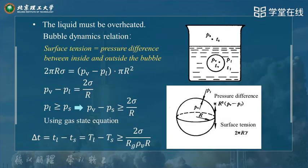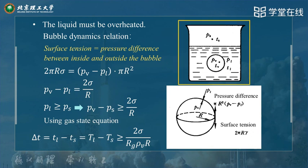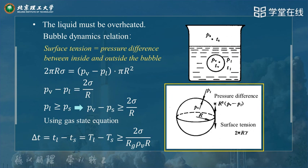Let's discuss a very typical pool boiling process. In this case, there are two very special conditions. One is that the liquid must be overheated. Another is that the liquid volume must be very large. Many bubbles are produced in the liquid. For one bubble with radius R, we can obtain the force balance equation — the bubble dynamics relation.